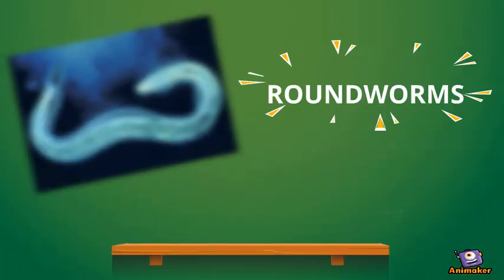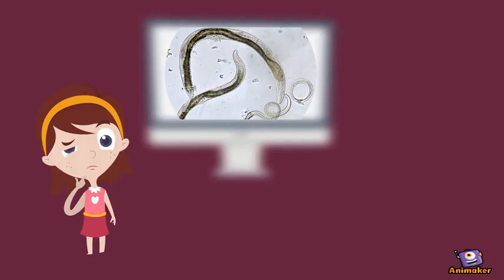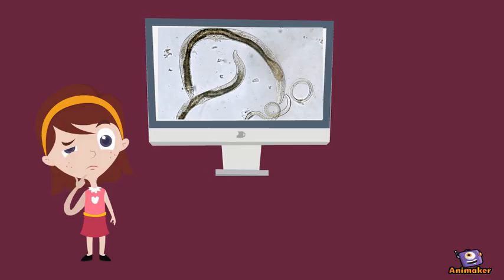Nematodes are also called roundworms. They have a length of 2mm to 1m. They are unsegmented, cylindrical, and elongated.